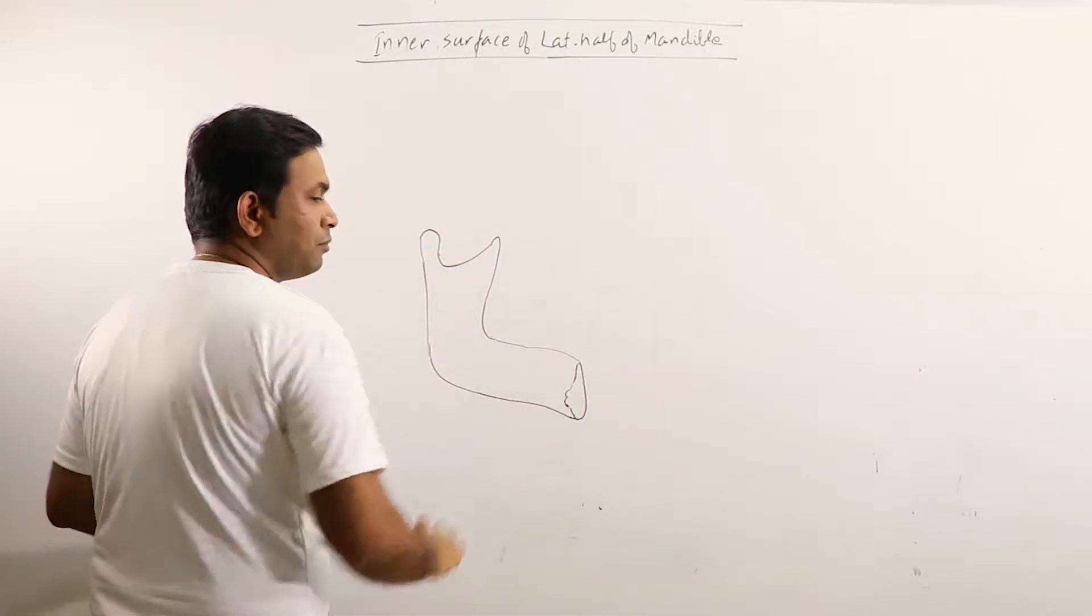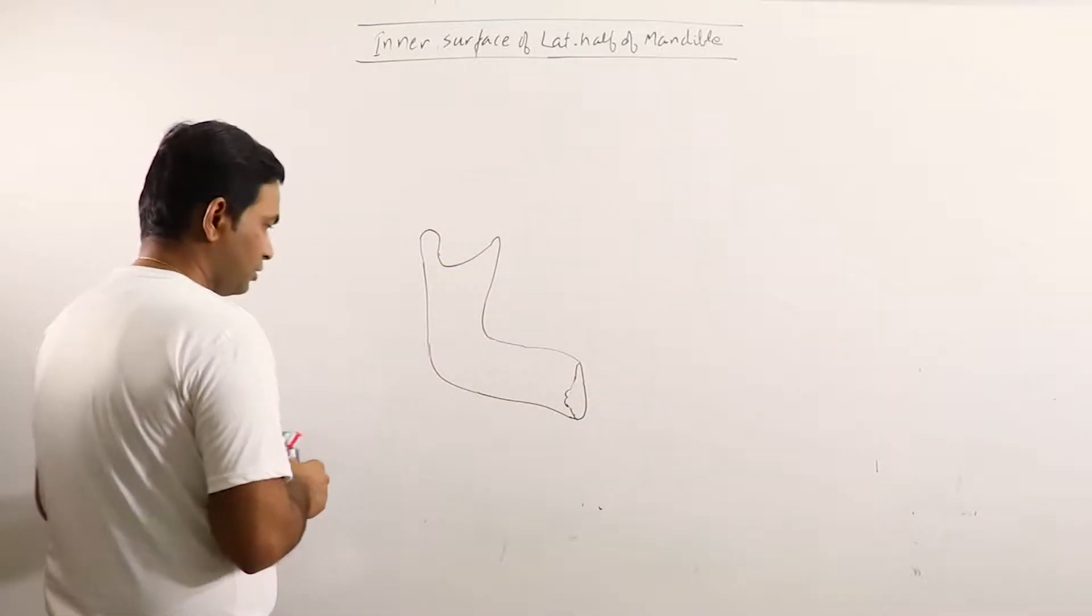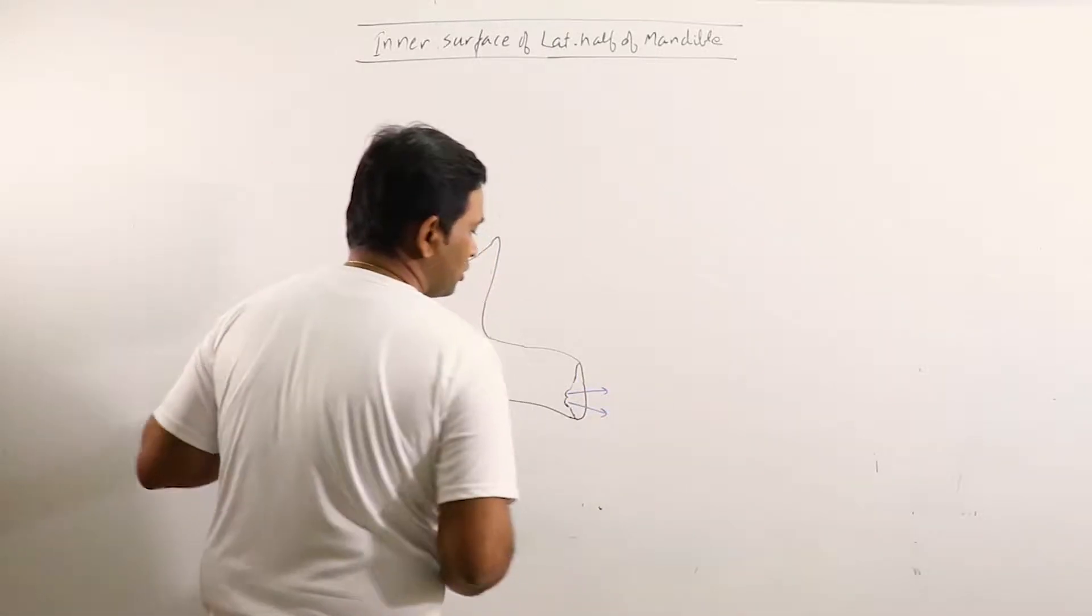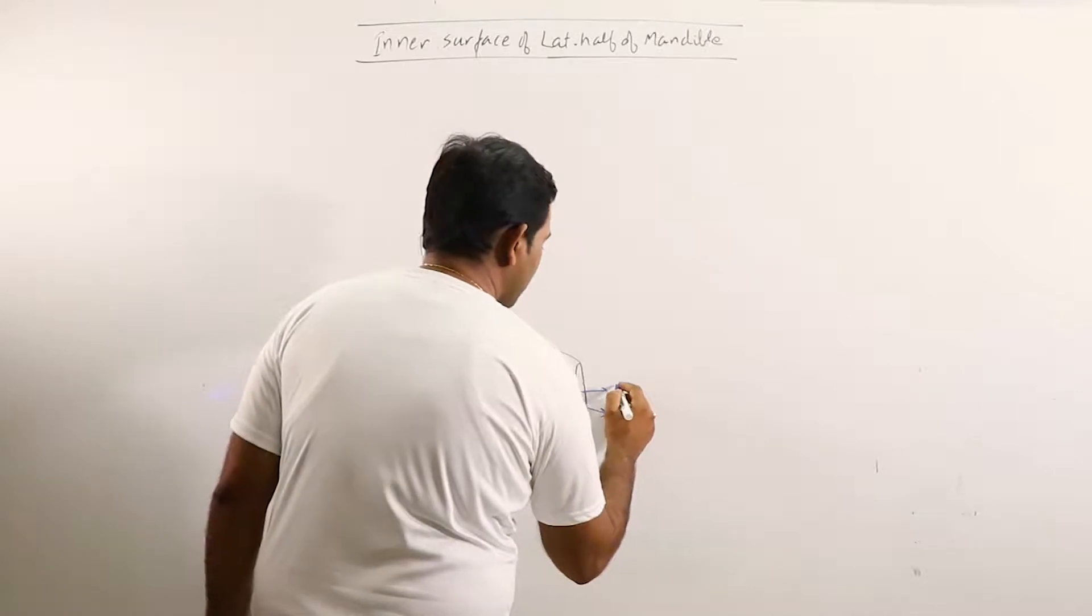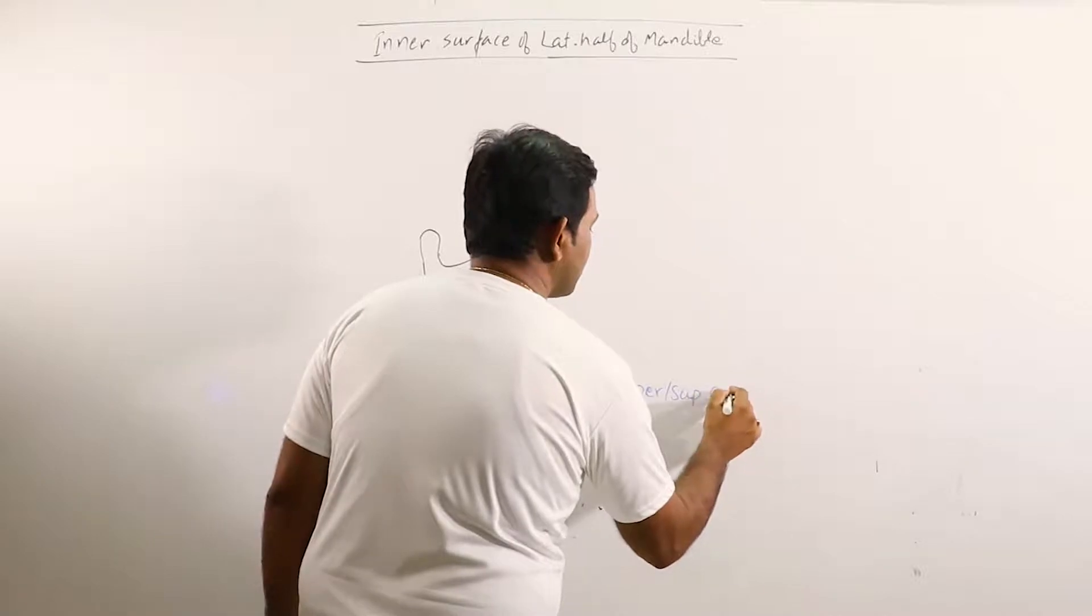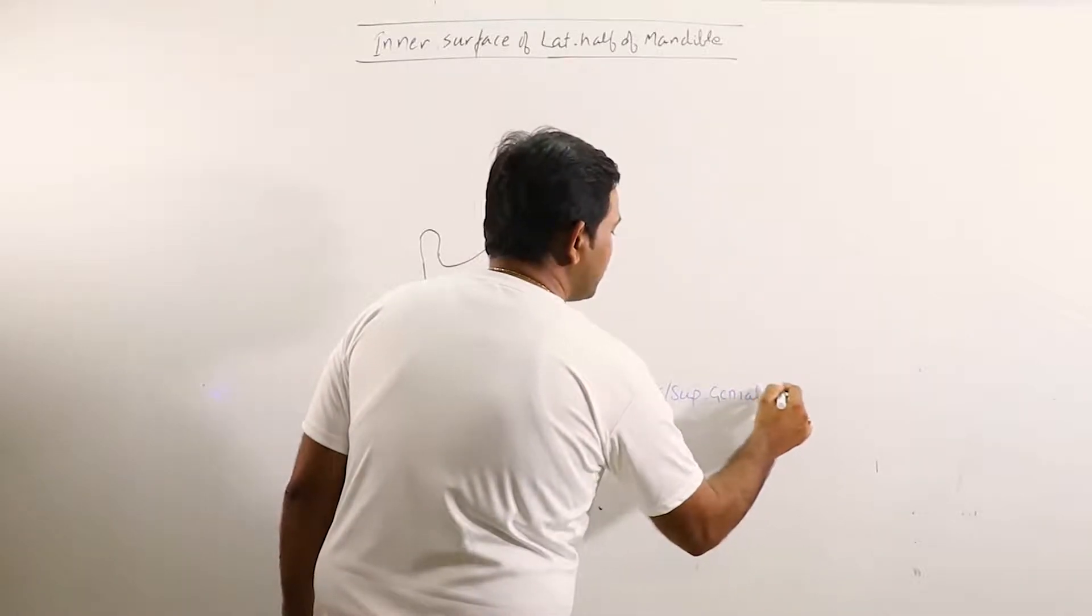This is the ramus and this is the body. In this region we can observe there are two little elevations. This is upper or superior genial tubercle.